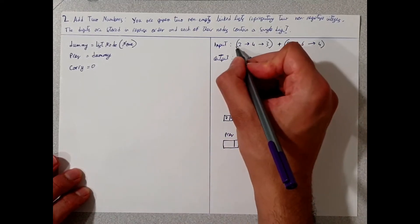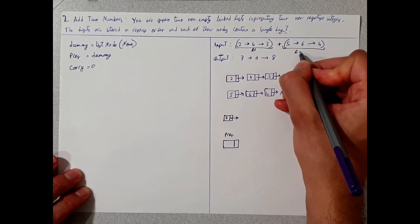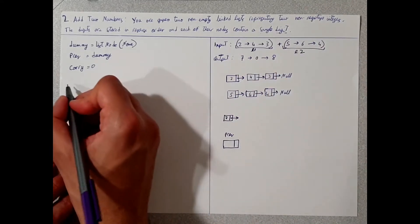So the input here is L1, which is the first linked list, and L2, which is the second linked list.